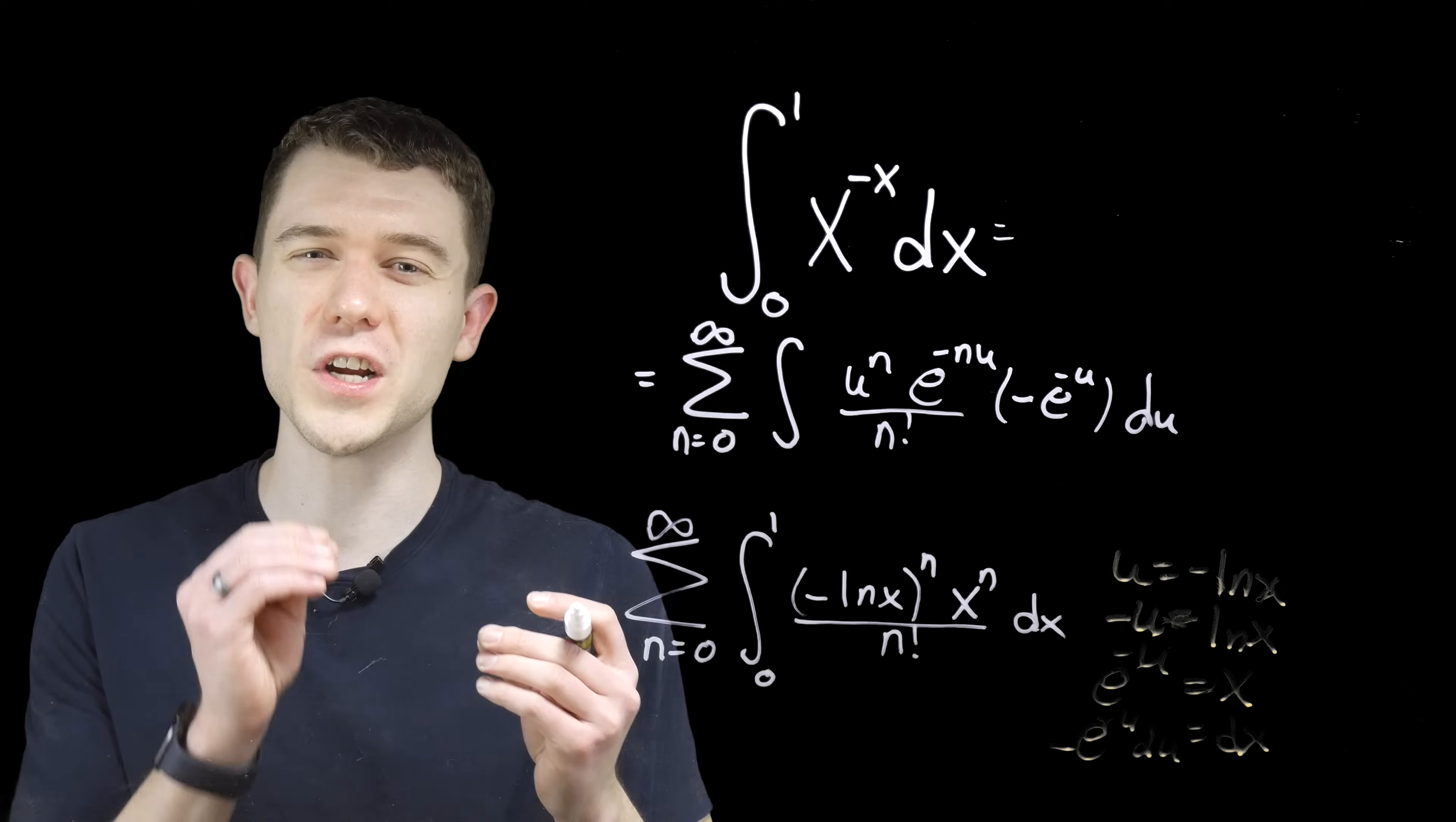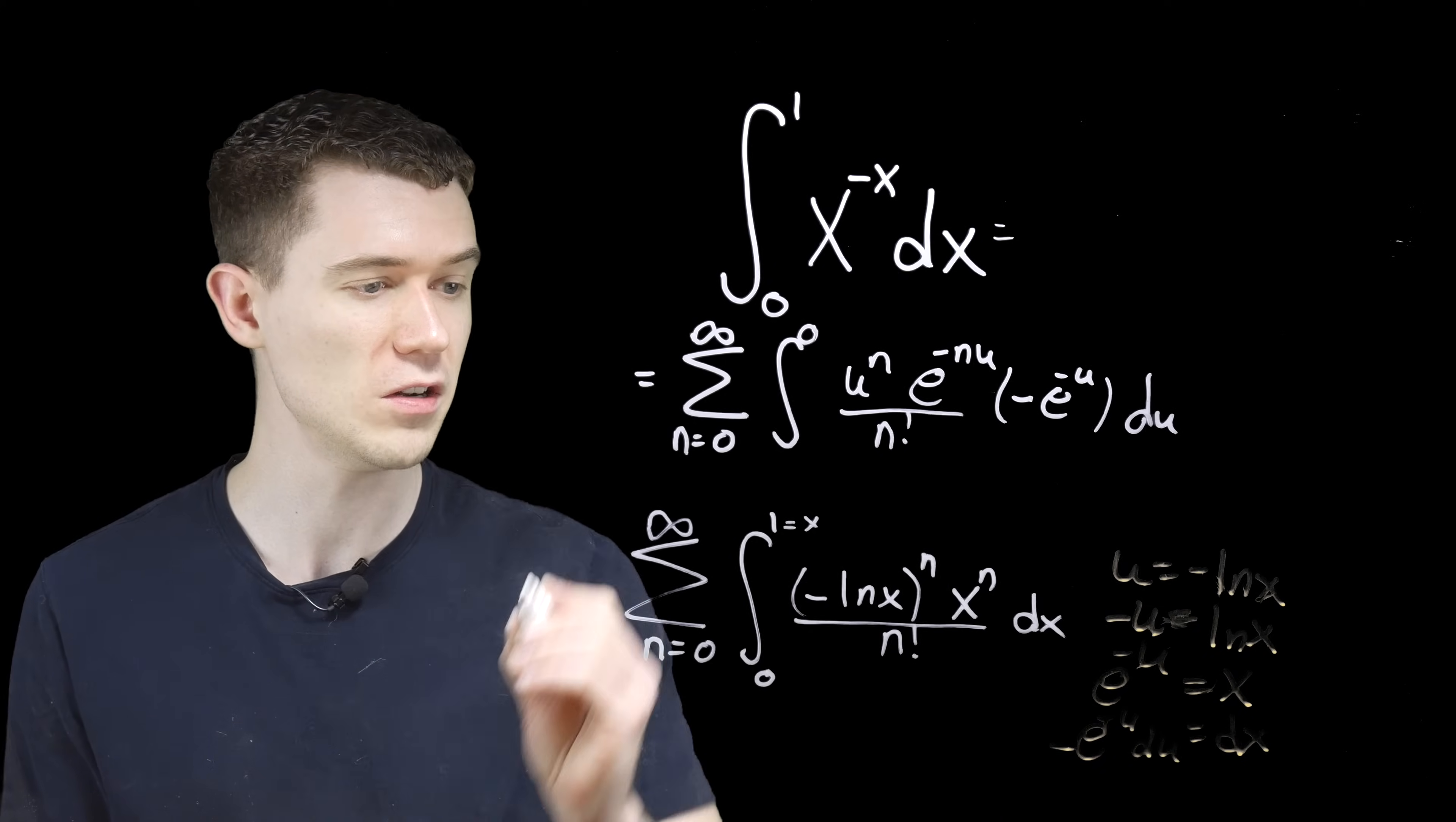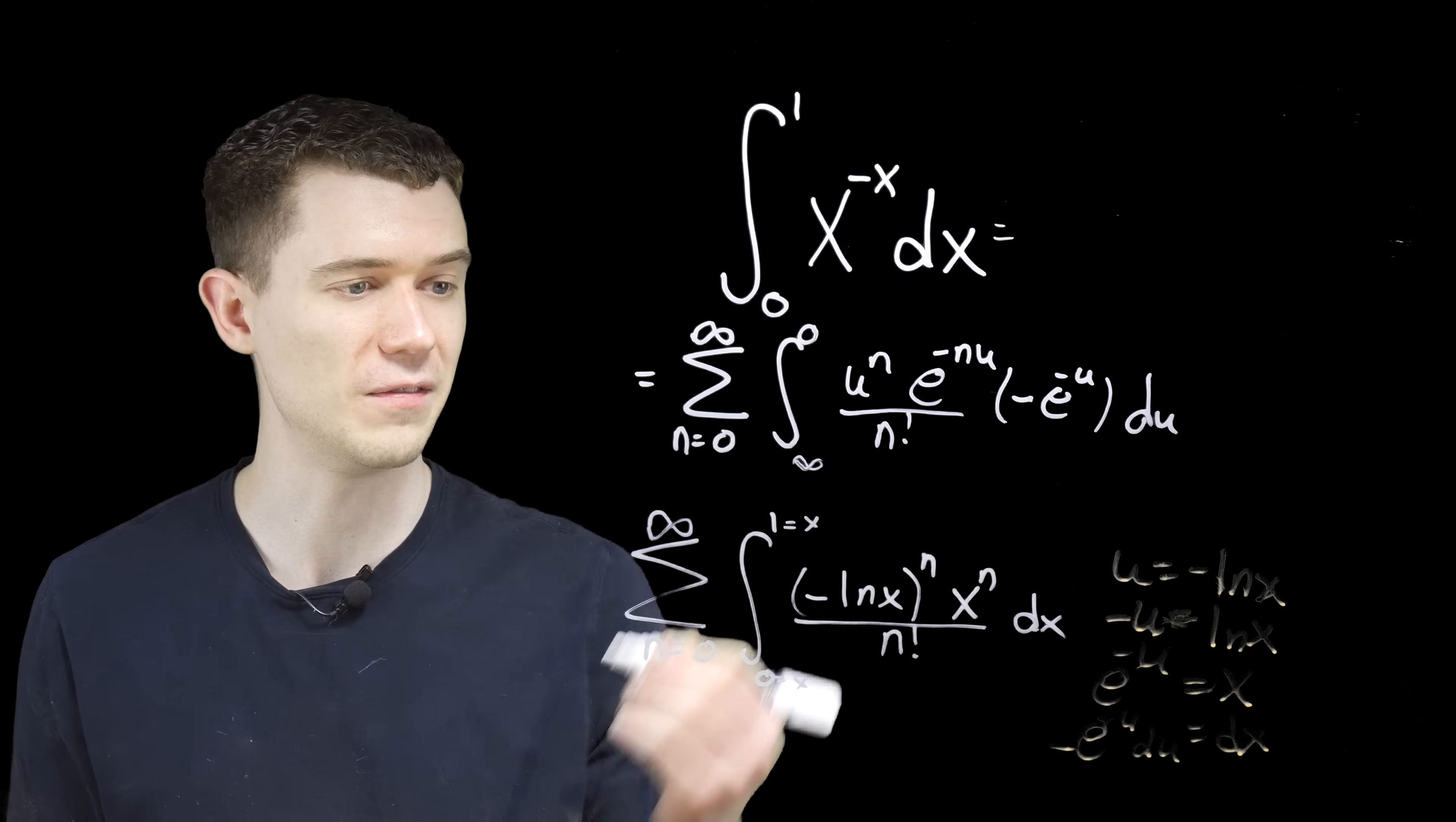Since we've done a u substitution, we need to change those bounds. Those x bounds were originally 0 to 1. We need to change them to u bounds. So when x was 1, according to our substitution here, that would be minus ln of 1, which is 0. So this bound should change to 0. And when x is 0, that would be like minus ln of 0. Well, we can't really take the ln of 0. We know ln of 0 is undefined. But it does spike down towards negative infinity there. So it's kind of like negative, negative infinity. We'll just say infinity here.